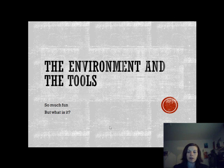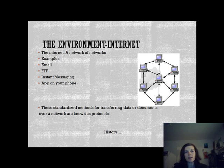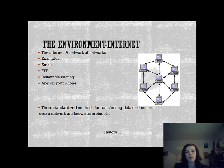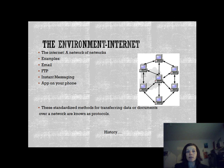I want to start off talking a little bit about the environment. Oftentimes people talk about the Internet and the Web as being the same thing. I'm not going to go too much into the history here — I just want to throw out a few terms. So what is the Internet? The Internet is actually a network of networks — a series of computers connected to each other. Examples of Internet services versus the Web include email, FTP (File Transfer Protocol), a system set up for transferring files from one computer to another, instant messaging, or apps on your phone. Standardized methods for transferring data or documents over a network are known as protocols — that's a term we're going to hear a lot.